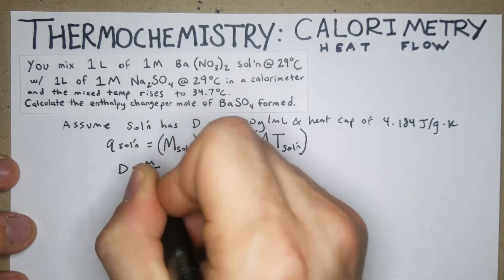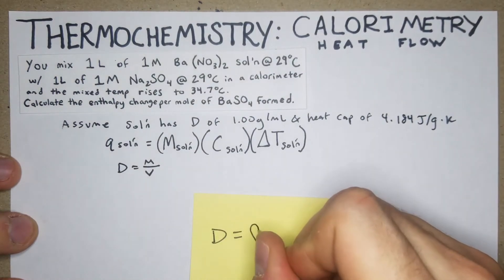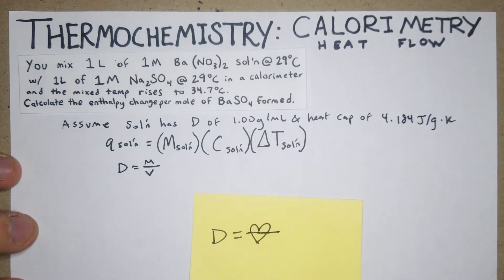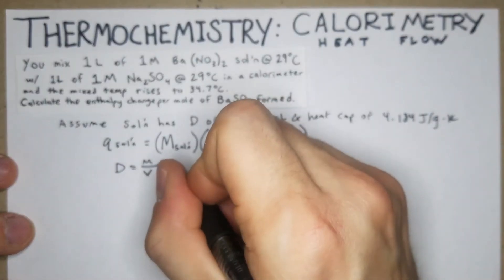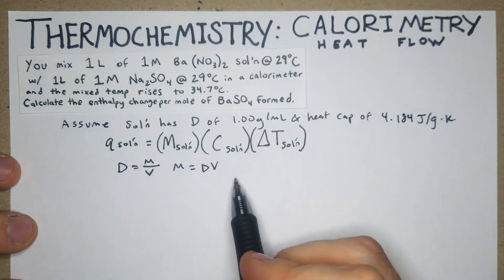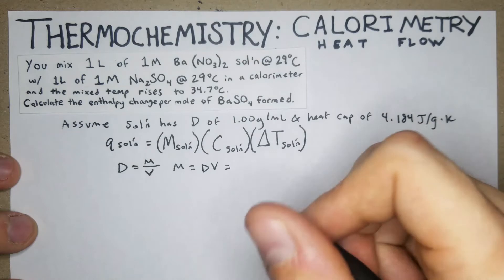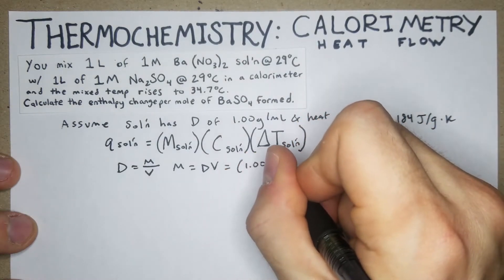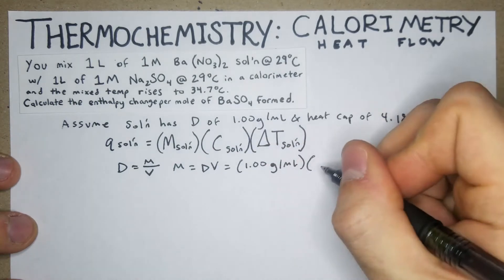Density equals mass over volume — I always remember that as a heart shape. You can use algebra to get m = d × v. Our density is 1.00 g/mL, and our volume is going to be 2 liters total.